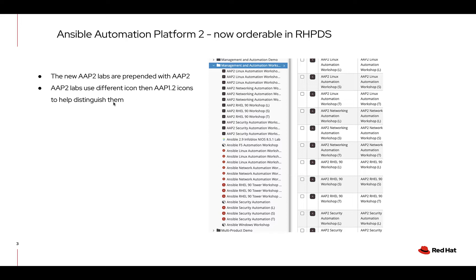If you are an employee or partner or part of the Red Hat ecosystem, you can use the RHPDS system, the Red Hat Product Demo System. When you log in, you'll see that the new labs are black with a white A, and they're prepended with AAP2, indicating Ansible Automation Platform 2. The older labs will run in conjunction for a little bit — we're going to try to deprecate them out in about a month. They have a red A, and refer to Ansible Automation Platform 1.2, which corresponds to Ansible Tower.